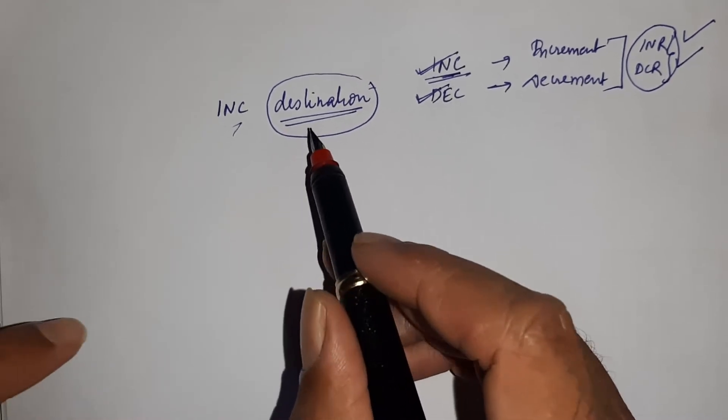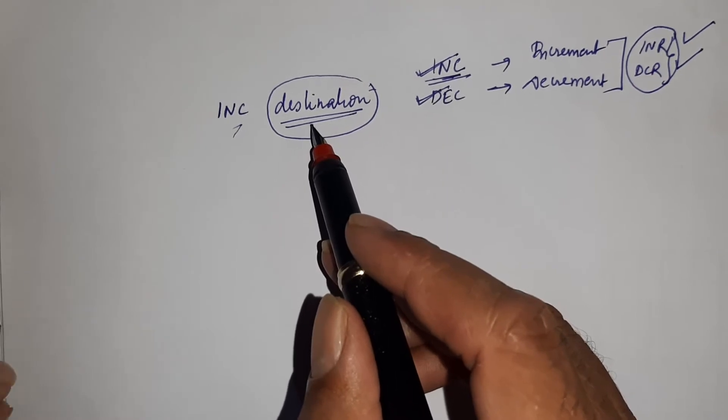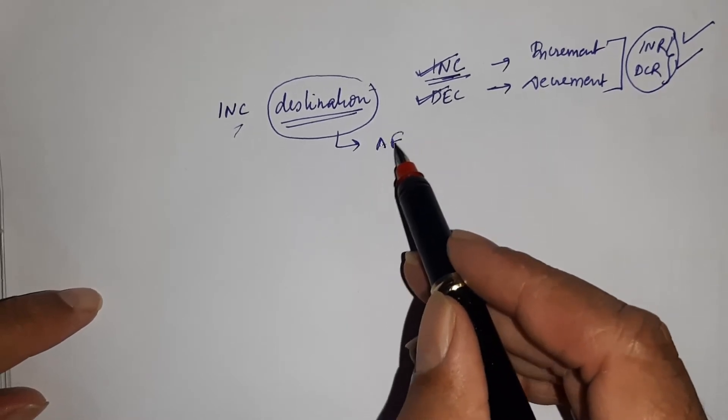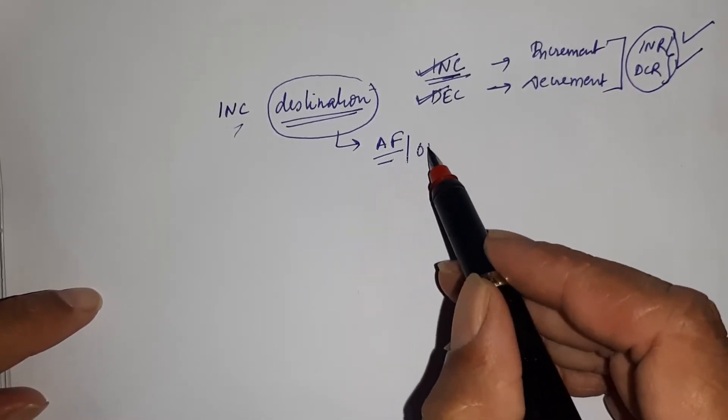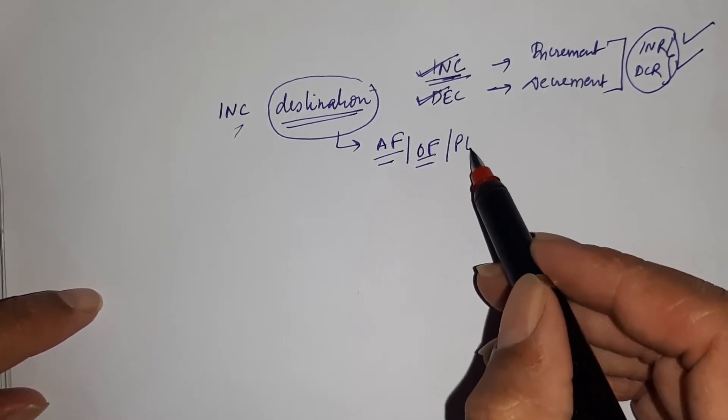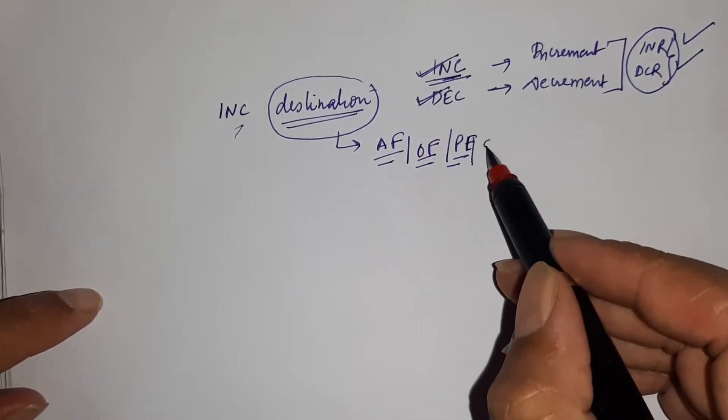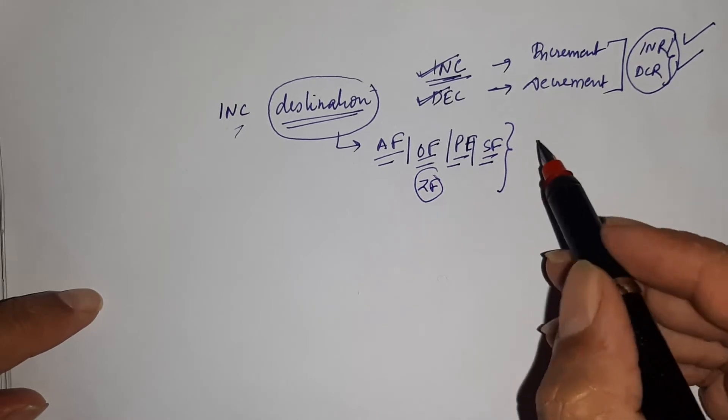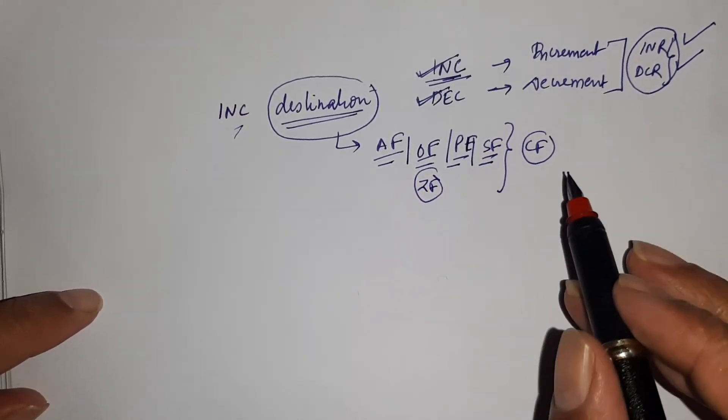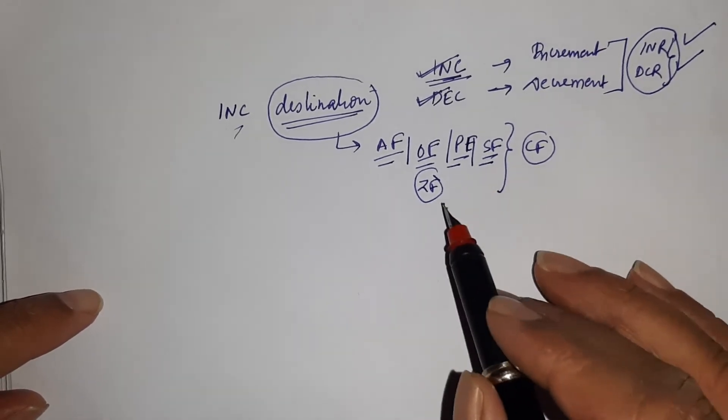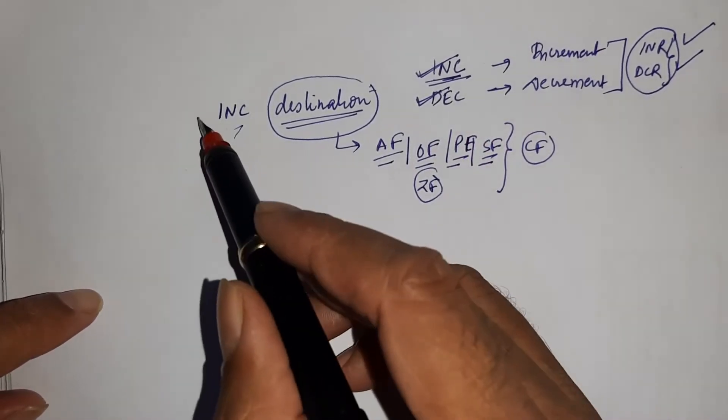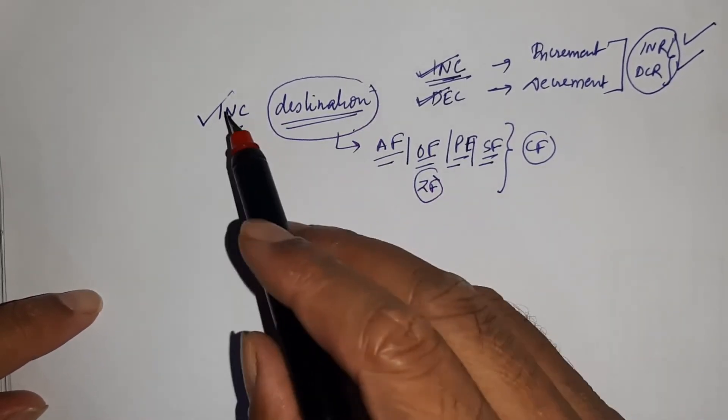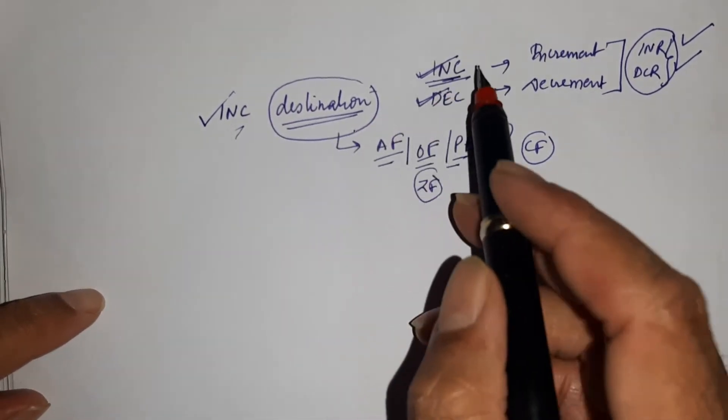If we are talking about flags, in this case AF means auxiliary flag, OF means overflow flag, PF means parity flag, SF means sign flag, and ZF means zero flag are updated. The carry flag will not be updated, meaning not affected in the case of INC and DEC. INC is used for incrementing the content of a given register or memory, and DEC is used for decrementing the content.